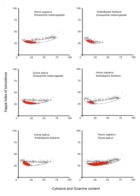Few natural promoters have been identified to date that possess intact consensus sequences at both the −10 and −35. Artificial promoters with complete conservation of the −10 and −35 elements have been found to transcribe at lower frequencies than those with a few mismatches. The optimal spacing between the −35 and −10 sequences is 17 bp.